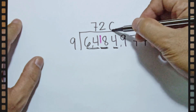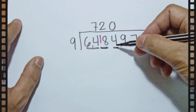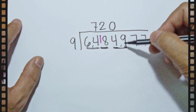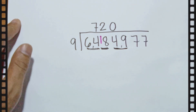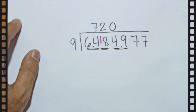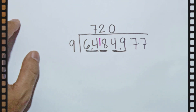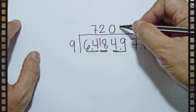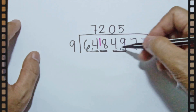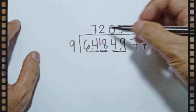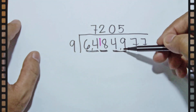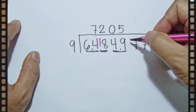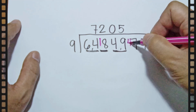We can make zero 9s out of 4. Zero times 9 is 0, and 4 minus 0 is 4. So 4 will become 49. How many 9s can you make from 49? 9 times 5 is 45, so we can make 5 nines. 49 minus 45 is 4, so the remainder 4 is carried to the next number.